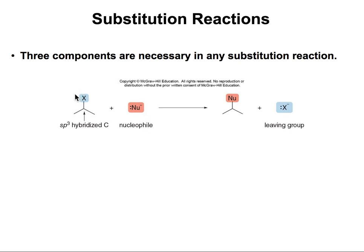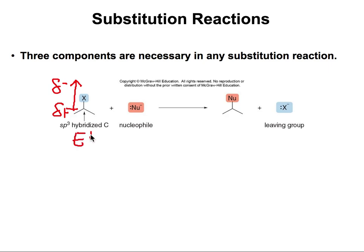When we have a substitution reaction, there are three elements that we're always going to look for. The first one is our nucleophile. The second one is our electrophile - as we saw in the previous video, the electrophile is usually the carbon that is connected to the halogen, because the halogen is pulling away electron density from the bond and weakening it. So this carbon becomes my delta plus, and the halogen has the delta minus.